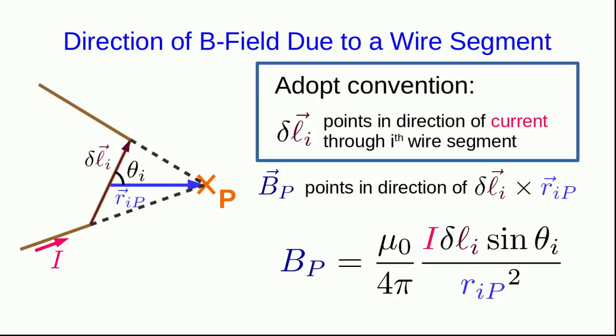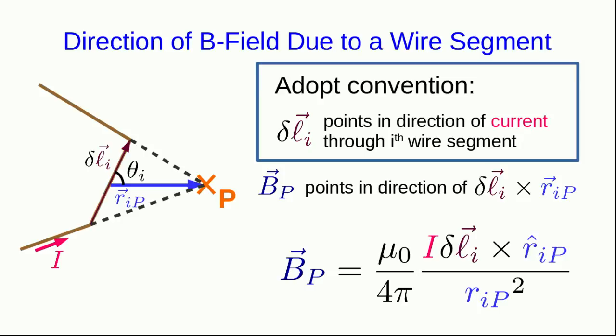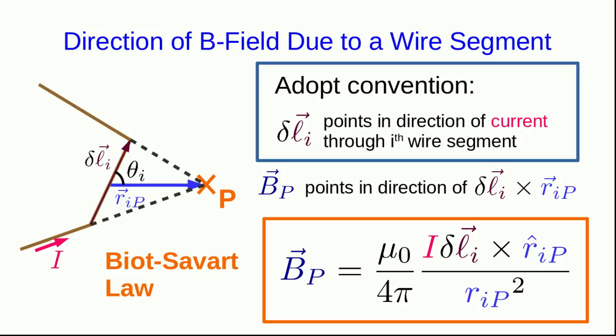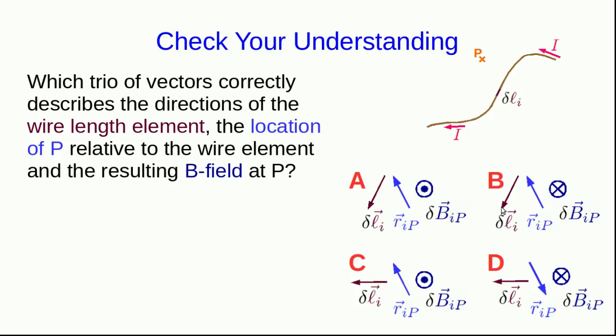And so we can write our full form for the magnetic field due to a wire segment like this. And this is known as the Biot-Savart law. As always with magnetic fields, the difficulty here is getting all the directions of the vectors right. So, practice.